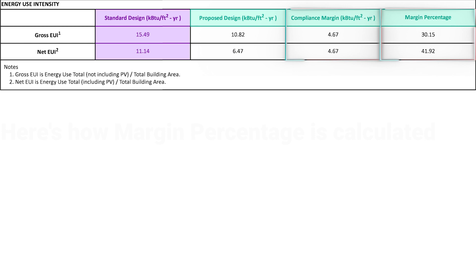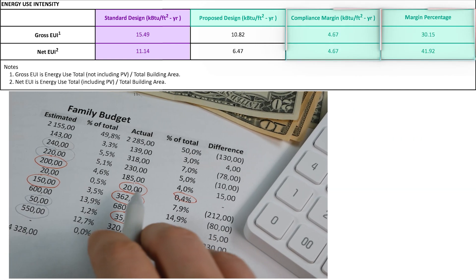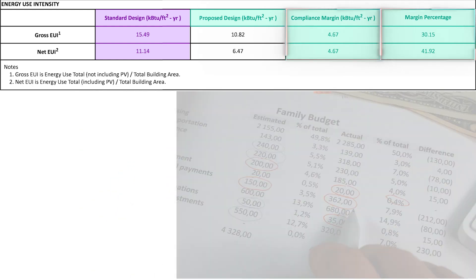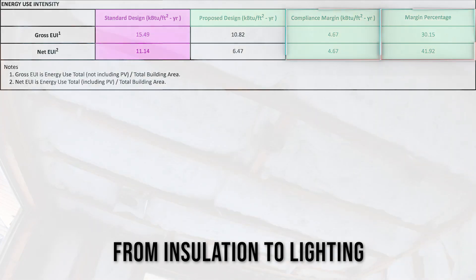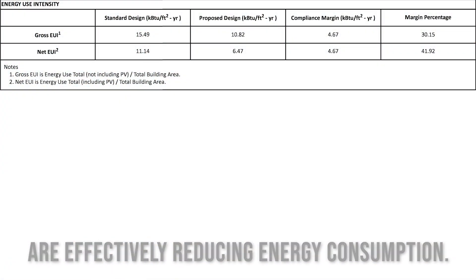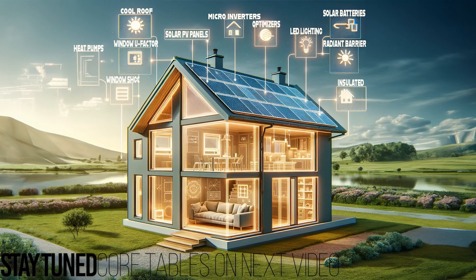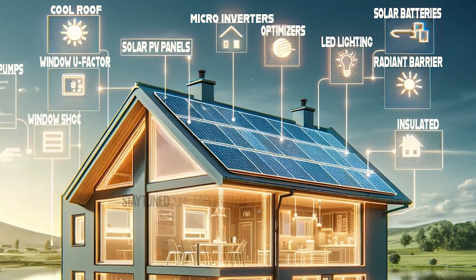The Compliance Margin and Margin Percentage columns act as indicators of how much better your design performs compared to the basic requirements. Positive values mean your building uses less energy than the standard design, which should save you money. These columns confirm that the comprehensive approaches in your design — from insulation to lighting — are effectively reducing energy consumption. This table wraps up the efficiency story told by earlier tables and is the final confirmation that your building is designed to be an energy-saving rock star.